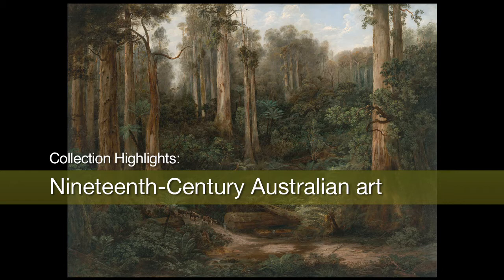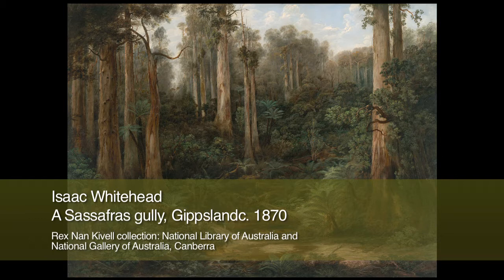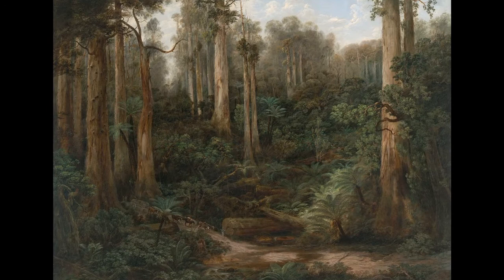Isaac Whitehead painted a number of views of the forest scenery of Gippsland in Victoria with large trees, tree fern gullies and clear springs. The trees in Gippsland were famed for their colossal size, with the mountain ash trees being among the largest in the world.